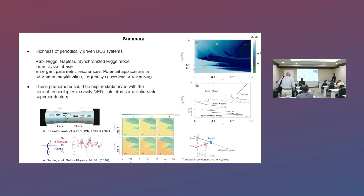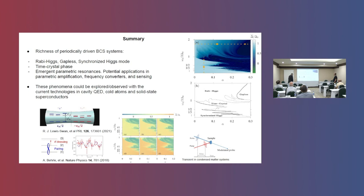So this is the summary of my talk: the dynamical phase diagram of a periodically driven BCS system is surprisingly rich. We have Rabi-Higgs oscillations, a gapless-dephasing regime, synchronization phenomena, and time crystal phases. We also find emerging parametric resonance with potential applications in parametric amplification, frequency conversion, and sensing. More interestingly, these phenomena could be observed with current technology — for example, using cavity QED, cold atoms, or solid-state superconductors — and the parametric resonances are pretty robust to relaxation mechanisms because they can be seen at very short times. Thank you very much.